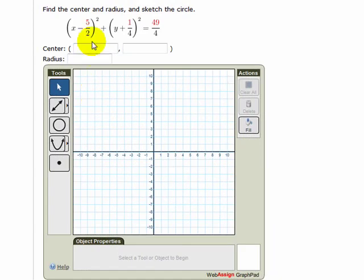In this example, we'll look at graphing a circle with GraphPad where the center and radius are both fractions. Because of the way GraphPad plots the circle, we need to know ahead of time both the center and a point that's on the circle.